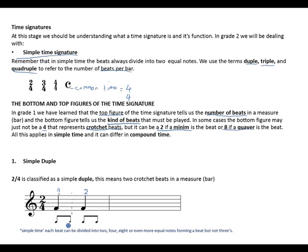Two quavers form one beat. Beat two is also divided into two notes. You can also divide this into four notes forming one beat — making them semiquavers — giving you beat two. Remember: simple time means each beat can be divided into two, four, eight, or even more equal notes forming a beat, but not threes.